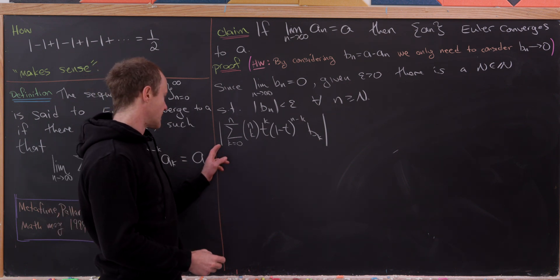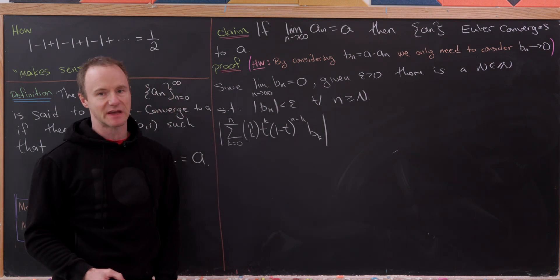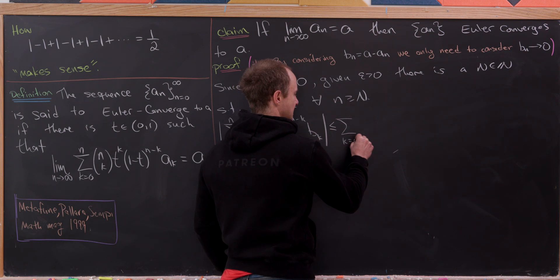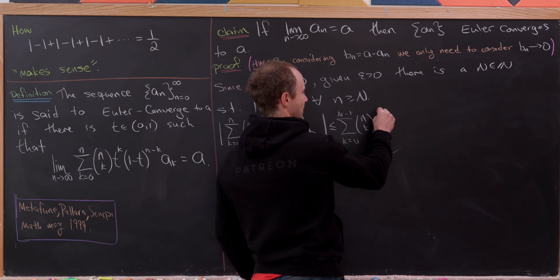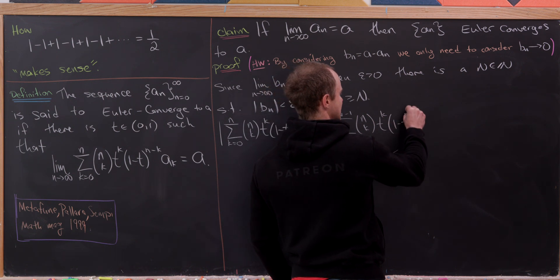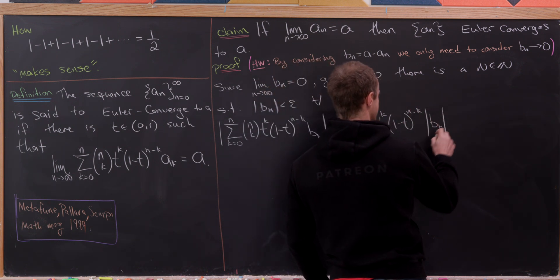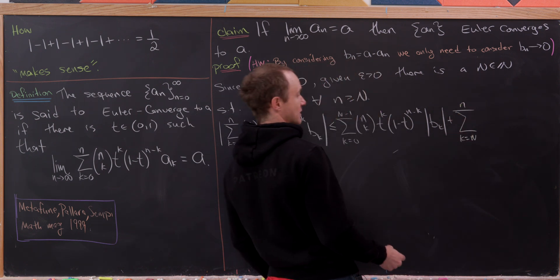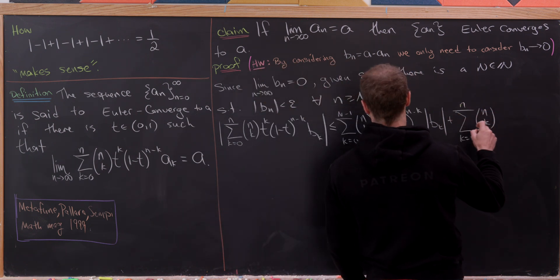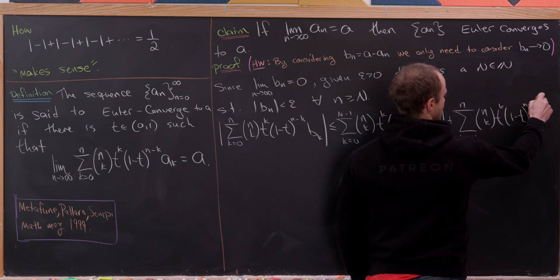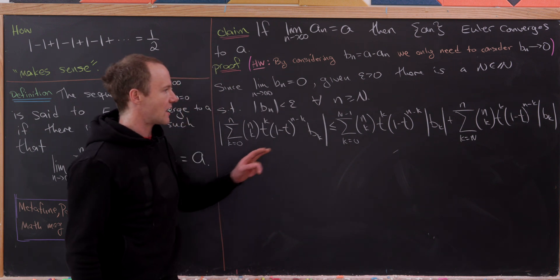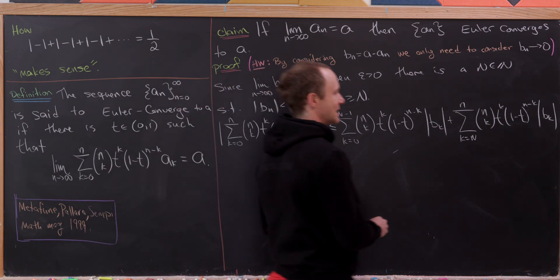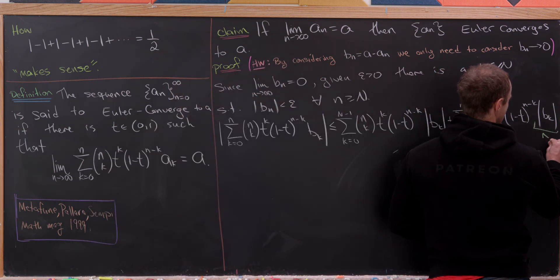Using the triangle inequality, I'll bring the absolute value inside the b sub k term as I split this sum. This is less than or equal to the sum as k goes from zero up to capital N minus one, with our binomial coefficient, t to the k, (1 minus t) to the (n minus k), times the absolute value of b sub k, plus essentially the same thing starting at capital N and ending at lowercase n. Now, all of those b sub k terms in the second sum have absolute value less than epsilon, by the way we chose capital N.